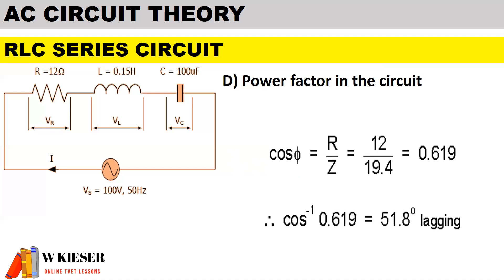To determine the phase angle, it'll be cos to the minus 1 multiplied by 0.619. Therefore the phase angle is 51.8 degrees lagging. This is a mainly inductive circuit.